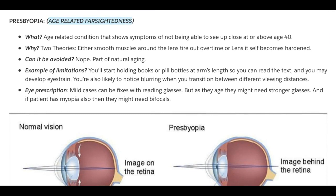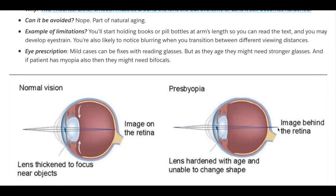Presbyopia, Age-Related Farsightedness. This is an age-related condition that shows symptoms of not being able to see up close, typically at age 40 or above. This happens because either the muscles around the lens tire out and can't perform the process of accommodation, or the lens itself becomes hardened and can't perform accommodation — which is the process of bringing light that focuses behind the retina back onto the retina correctly. It cannot be avoided because it is part of natural aging.